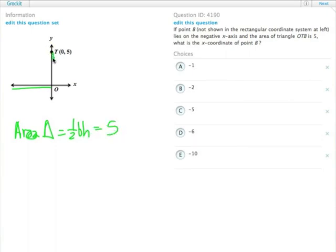We also know the height of the triangle because we know that point T ends at 5 on the y-axis. So, one-half the base, which we don't know, times the height, which we do know, equals 5.